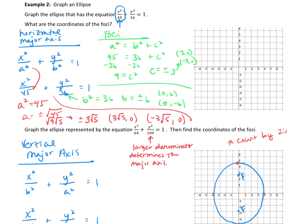We just ran through a lot of information, so let's plot these points. The foci are at (3, 0) and (-3, 0). The vertices on the major axis are at 3 root 5, which is about 6.7 — so we estimate 6.7 on both sides for the positive and negative vertices. The co-vertices are positive and negative 6 on the y-axis, so up 6 and down to negative 6. Now we can draw in our ellipse. And there we go.